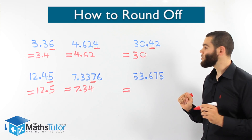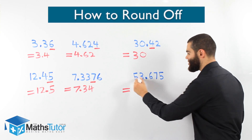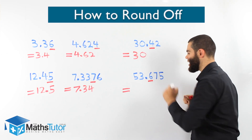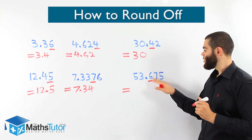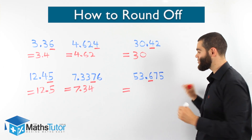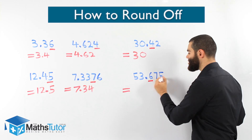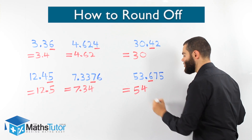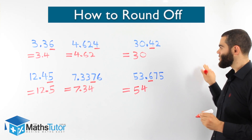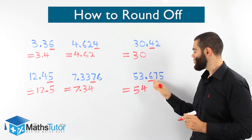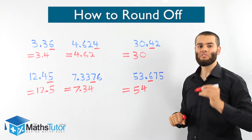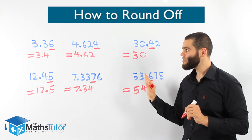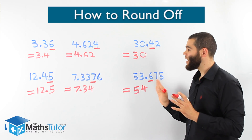53.675 — round off to the nearest whole number. This is the whole number. We ask our friend on the right: can you help us out? Can you round us up? 6 is larger than 5, so yes, it's got the muscles to push us up. 53.675 rounds up to the nearest whole number and becomes 54. As you can see, it always follows the same concept — we look to the number on the right: can it push us up or does it round down?